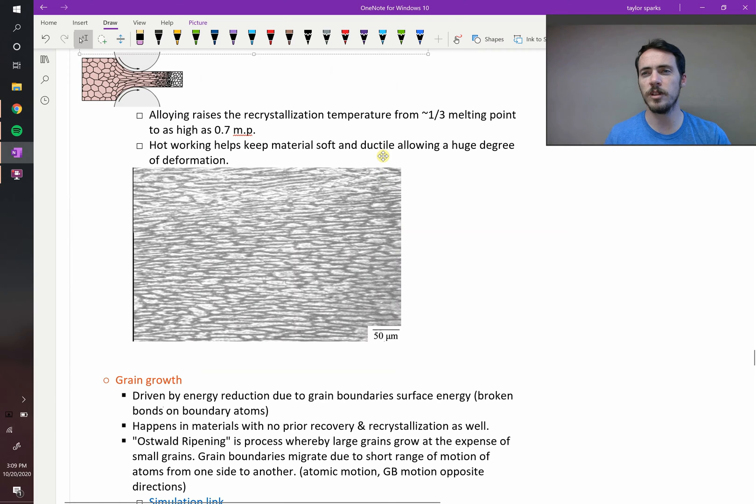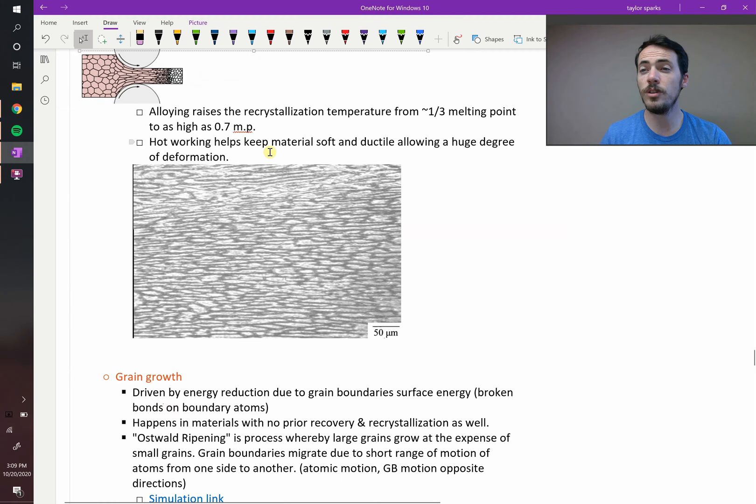So recrystallization temperatures, we already talked about. They're typically between a third and a half. They can be as high as even 0.7 on the melting point, and they really allow you to tune the properties, the mechanical properties of your metal.